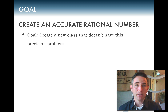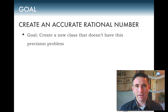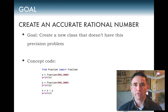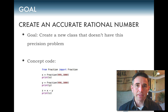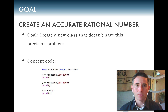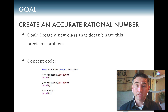The rationale for this tutorial is to create a rational number representation that doesn't have the precision errors of floating point. Our new class will be very accurate but potentially slow, which is why it's not used in production systems. We'd like to import our fraction class from a fraction.py file.